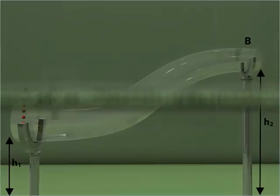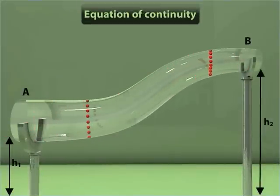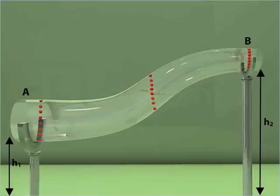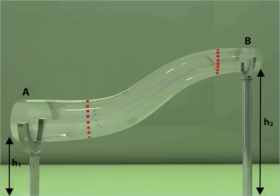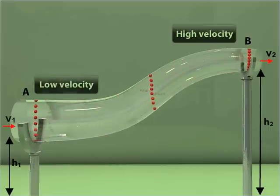Let us now prove Bernoulli's Principle by calculating the named energies separately. From the equation of continuity, velocity is high for regions of less cross-sectional area. Thus, the velocity at point B is greater than the velocity at point A.